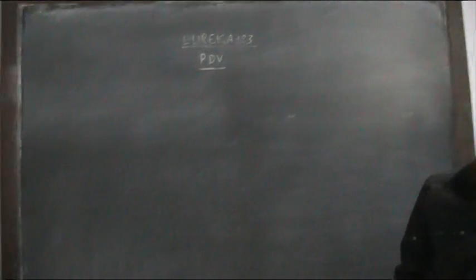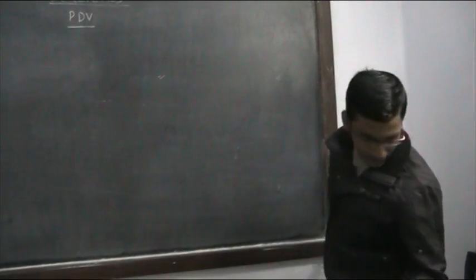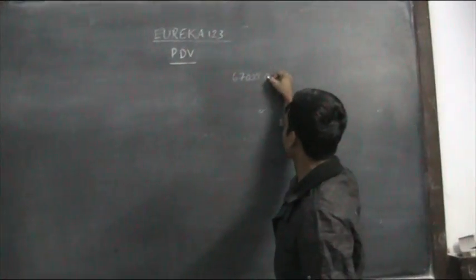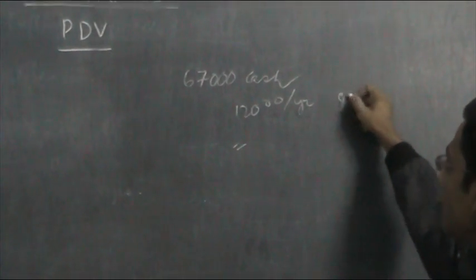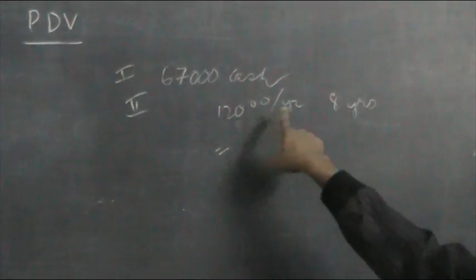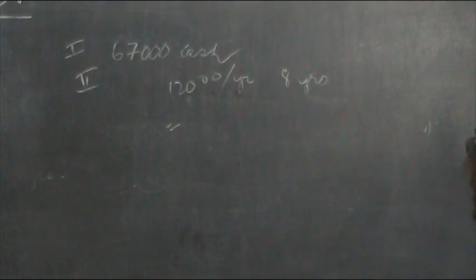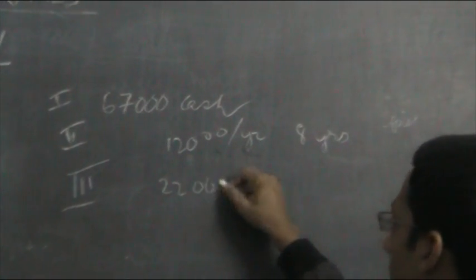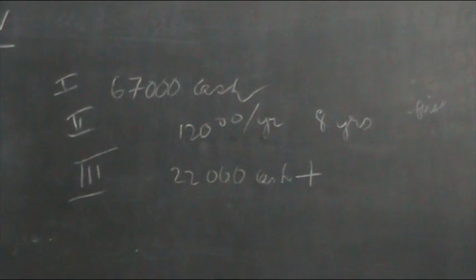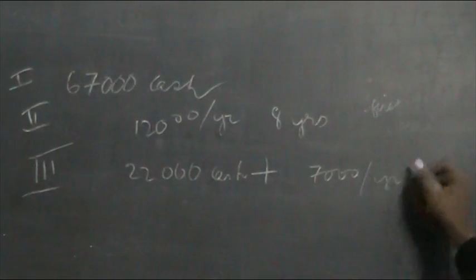Now suppose there is a question: a construction firm wants to buy a building site with a choice between 3 different payments. Option 1: pay $67,000 in cash. Option 2: pay $12,000 per year for 8 years, where the first installment is paid immediately at the start. Option 3: pay $22,000 in cash now and then $7,000 per year for 12 years.